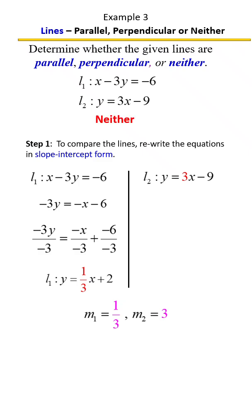That's correct. It's neither. So it can't be parallel because parallel lines have the same slope and these numbers are not the same. Perpendicular, it's not perpendicular because one of the numbers would need to be negative. Remember, negative reciprocals.